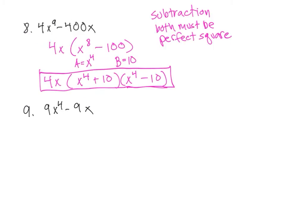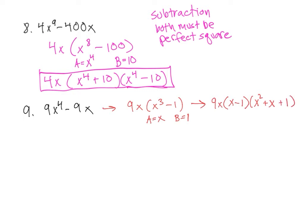Let's try 9. Here I have a common factor, which would be 9x, and that leaves me with x cubed minus 1. That means we're just going to use the difference of the cubes with pretty easy numbers. So we have 9x out in front, and then we go a minus b, then a squared plus a times b plus b squared. And that is it.